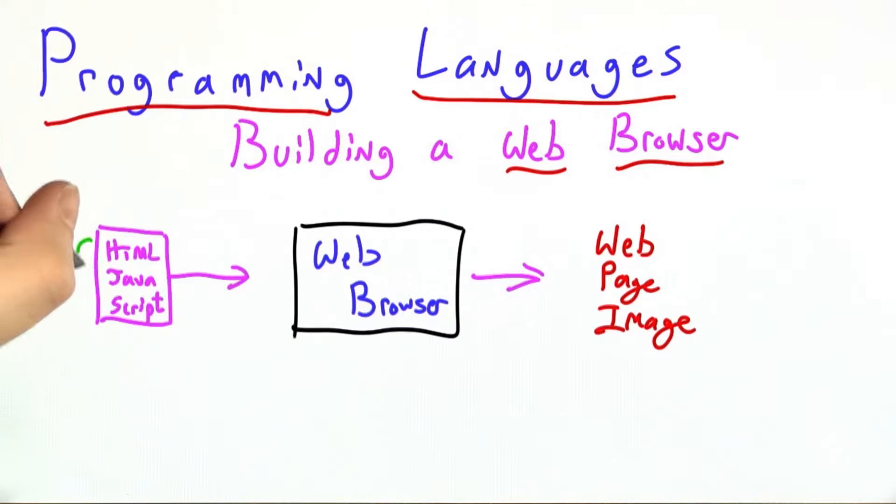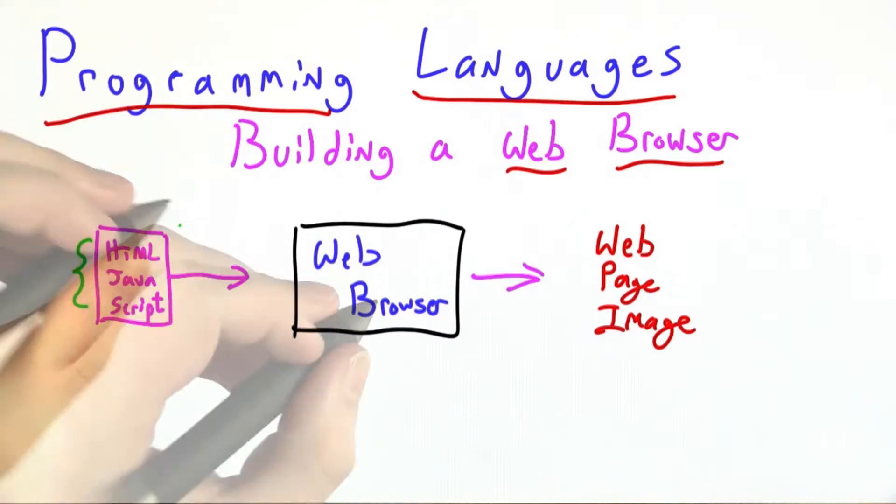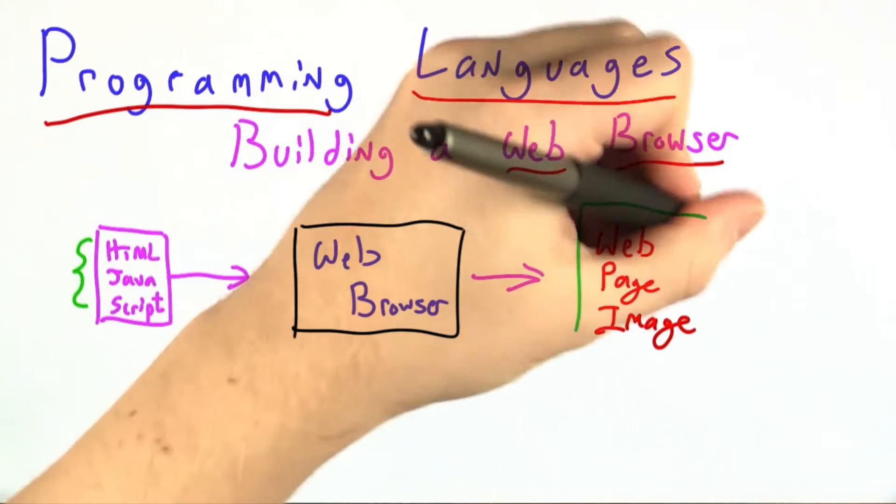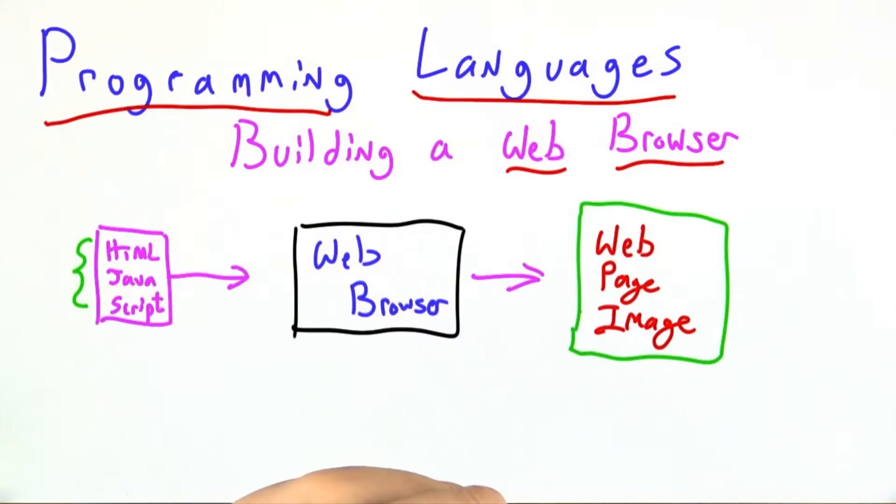Our web browser will accept as input HTML and JavaScript, the primary languages of the web, and use that to produce an image of the web page.